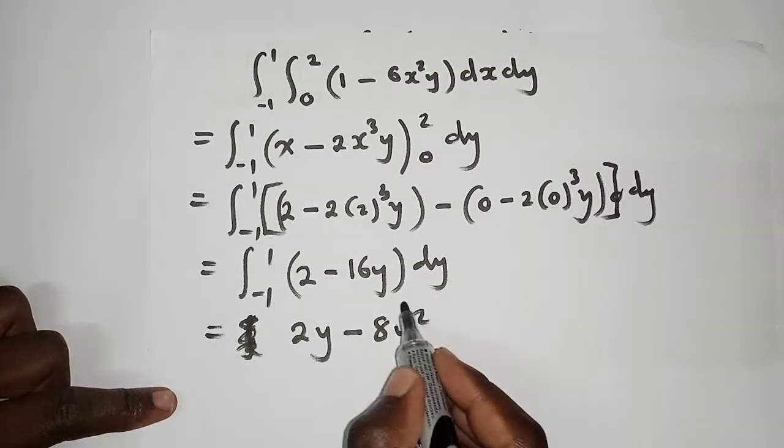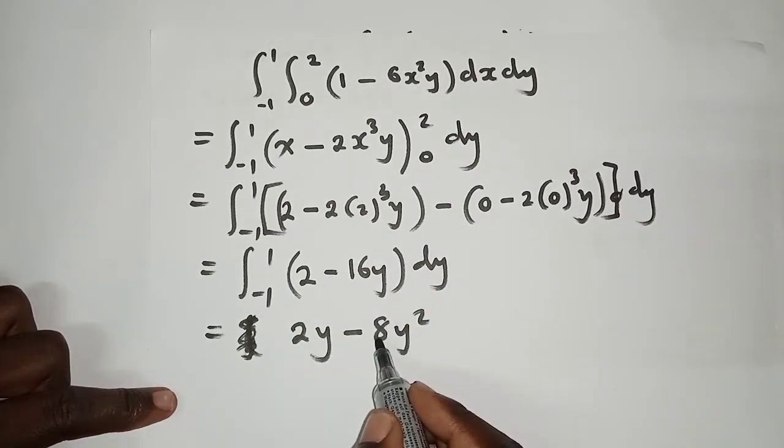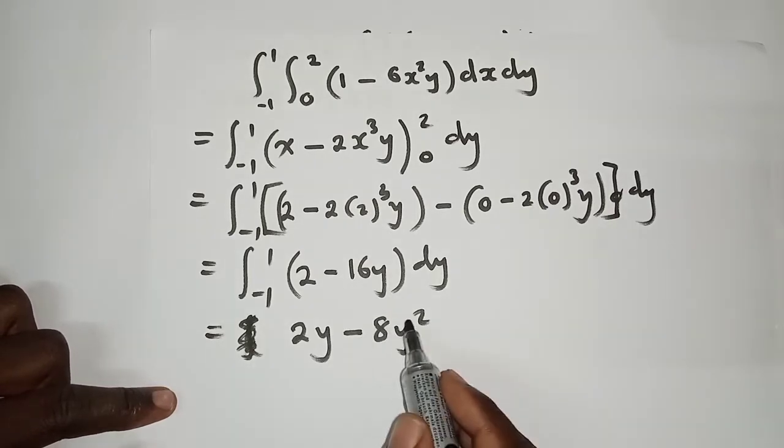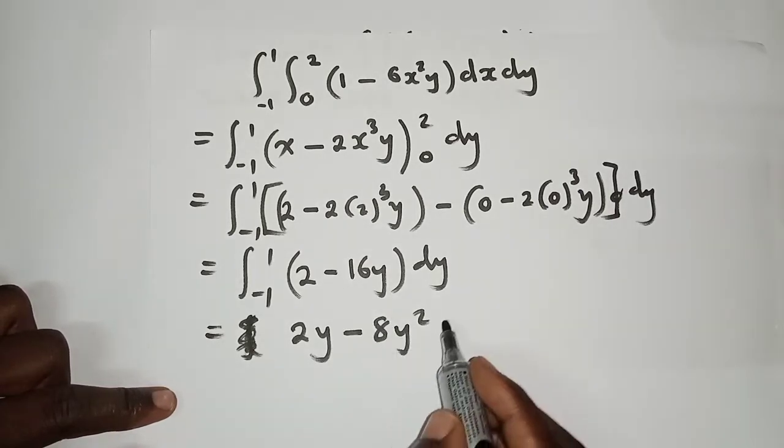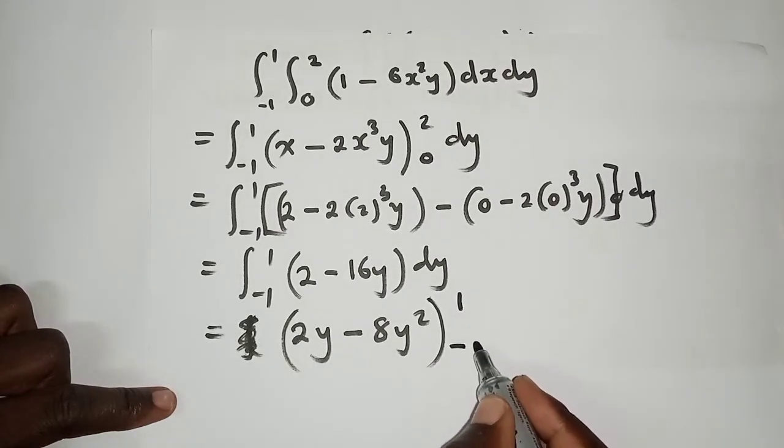Thereafter we can now respect Y. So when respecting Y, 2Y - this is a constant so it will be 2Y. Here we have 8Y², power 1 plus 1 is power 2. 16 divided by this power 2 we get 8, so negative 16 divided by 2 would be negative 8.